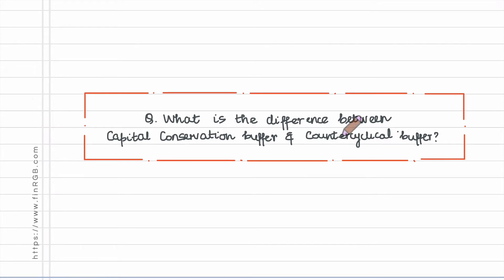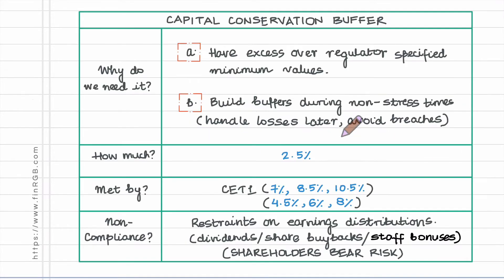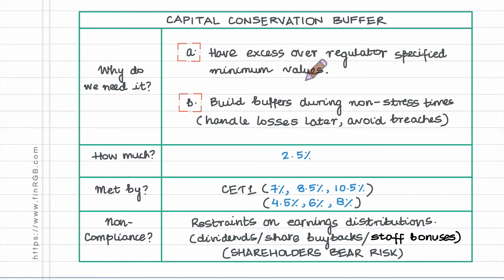Let us start with the capital conservation buffer and talk about why we need this type of buffer. One has to acknowledge that the regulator specified minimum values, let us say for a capital ratio or for that matter a type of capital — these regulator specified values are in fact minimums.